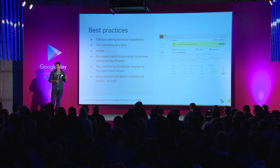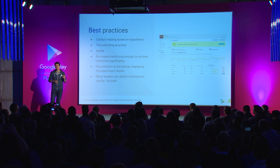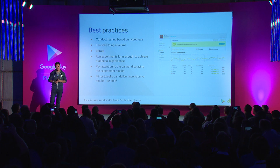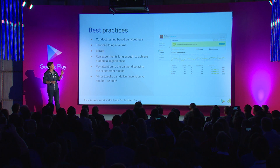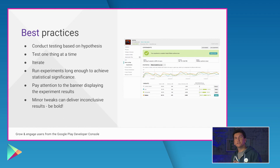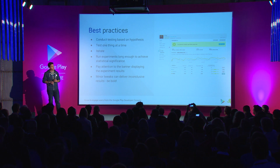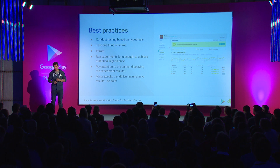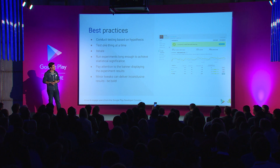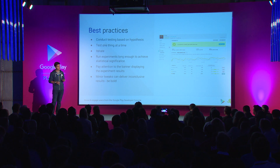Developers have been asking us what are the best practices for running store listing experiments. Here are some key points to consider. First, start with a hypothesis and test that. Only test one thing at a time. Once you get the results, iterate on that. You'll need to make sure you run your experiment for long enough to achieve statistical significance, and pay attention to the banner at the top of the page which will show you the results. Remember, small tweaks can be inconclusive, so be bold with your experiments.